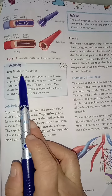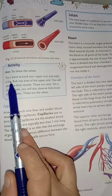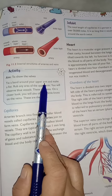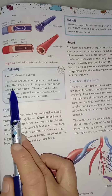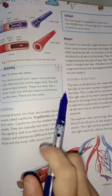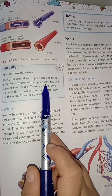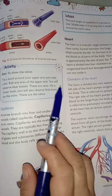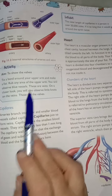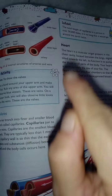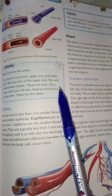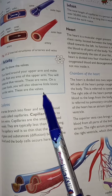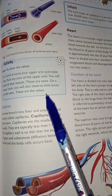Here is an activity to show the valves. Tie a band around your upper arm and make a fist, keeping it tight. Rub any area of the upper arm and you will observe blue vessels appearing — these are veins. Looking more closely, you will see knots or bumps along the veins; these are the valves, visible as blue bumps in the middle of the veins.